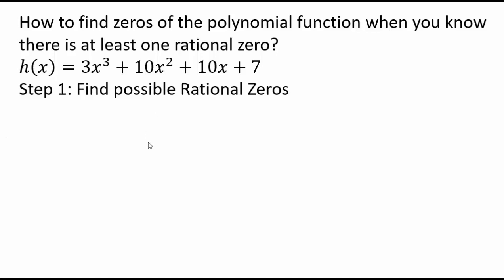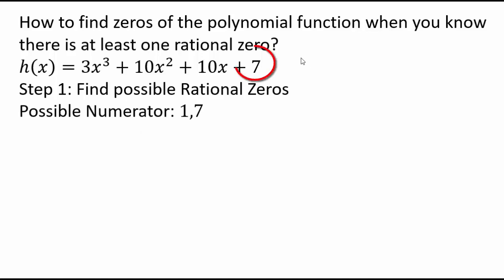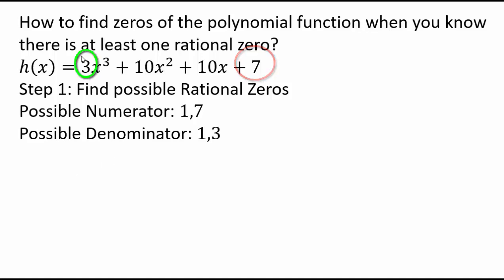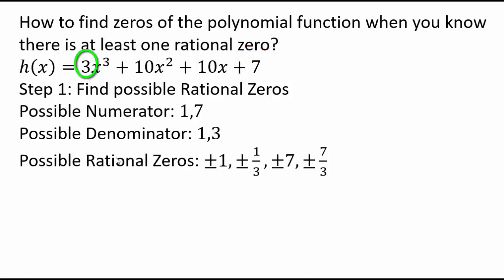The first step would be to find possible rational zeros. The possible numerators are factors of 7, so 1 or 7. The denominator will be factors of the leading coefficient, which is 3, so 1 or 3. So our rational zeros are plus or minus 1, plus or minus 1 third, plus or minus 7, and plus or minus 7 thirds.